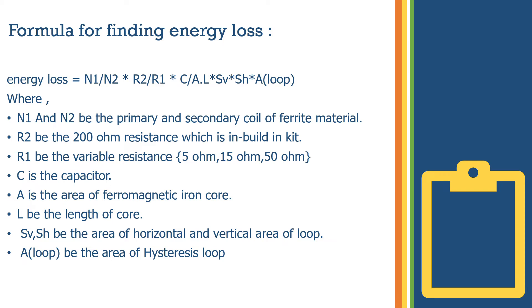To find the energy loss, we use the formula: W = N2 × R2 / (R1 × C) / (A × L × SH × SV × area of loop), where N1 and N2 are the primary and secondary coils of the ferrite material.